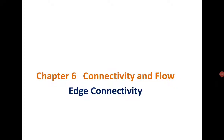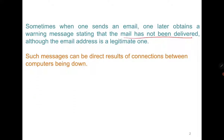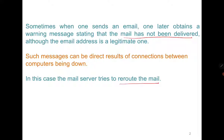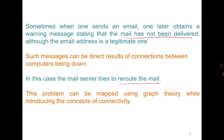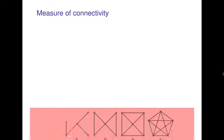Good morning everyone. In today's class we are going to start a new chapter about edge connectivity. We begin with the concept of connectivity. Sometimes when we send an email, we may get a message that the mail has not been delivered, and the mail server tries to reroute the mail if possible. This problem can be mapped using graph theory while introducing the concept of connectivity. If the system is very well connected, there is a possibility to reroute the mail — but how do we measure connectivity?